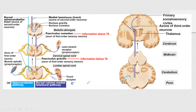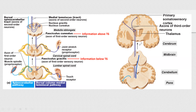So we have a touch receptor: the first-order neuron goes all the way to the medulla. It also applies to joint stretch receptors — proprioceptors. The first-order neuron goes to the medulla, synapses with the second-order neuron, decussates, moves to the opposite side, and continues to the thalamus. Remember: all sensory information except smell goes to the thalamus. From the thalamus, the third-order neuron goes to the cortex — specifically the primary somatosensory cortex.